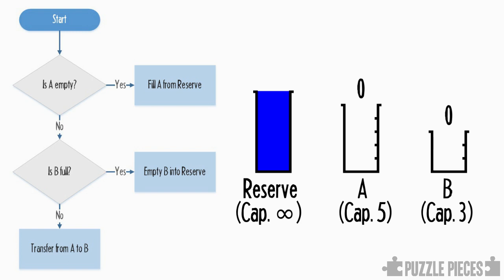So, stepping through the rules. To start with, A is empty, yes, so we'll fill it up from the reserve, and it now is at its capacity of 5.